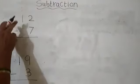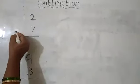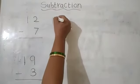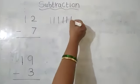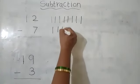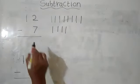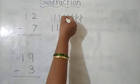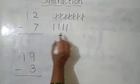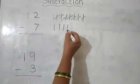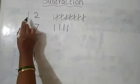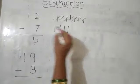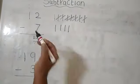In this example we have to subtract. Here is number 12 and here is 7, so we will draw 12 sticks: 1, 2, 3, 4, 5, 6, 7, 8, 9, 10, 11 and 12. These are 12 sticks and we have to cross out 7: 1, 2, 3, 4, 5, 6 and 7. How many are remaining? 1, 2, 3, 4, 5. We get 5. So 12 minus 7 equals 5. We drew 12 sticks, crossed out 7, and got the answer 5.